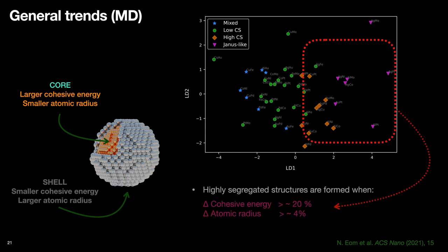And we could also see how much roughly the relative differences should be for a combination to form highly segregated structures.